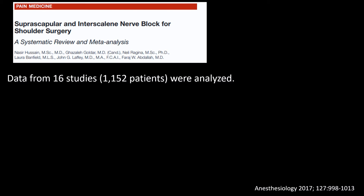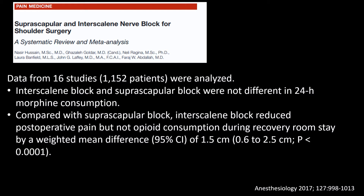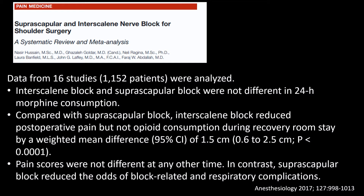The systematic review by Hussein et al. confirmed similar findings: the interscalene block and suprascapular block were not different in terms of morphine consumption in the first 24-hour period. The interscalene block fared better on pain scores in the PACU, but differences in opioid consumption were not significant, and at other time frames pain scores were not much different. The suprascapular block had a markedly reduced incidence of complications.